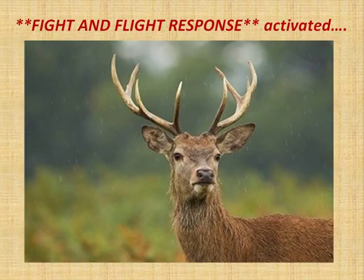All non-essential operations inside the body are immediately suspended — they are not required now. The deer needs to save its life. The blood from all the center parts of the body rushes to the extremities, to the legs, so that the deer can run real fast. The breathing becomes short, more oxygen is taken in, and sugar is released into the blood so that energy is available for the muscles.